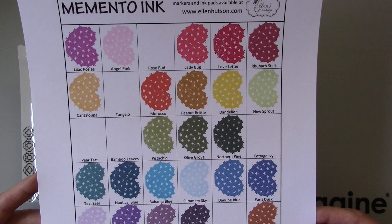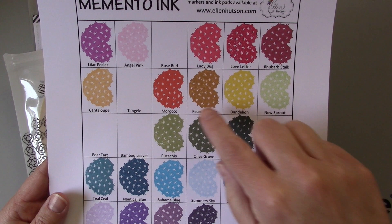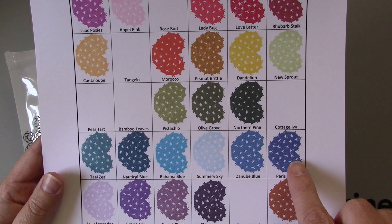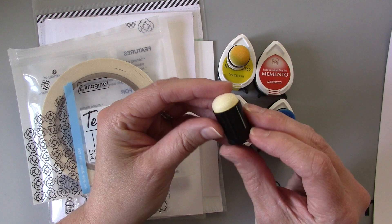In front of you you see a chart that I'm using with all of my memento inks stamped out by color using this chart that I found at EllenHudson.com. I love having swatches of my inks in front of me because you get to see the true color of the inks that you're using.